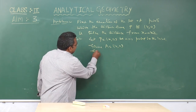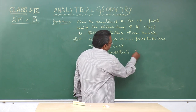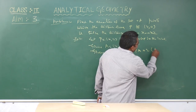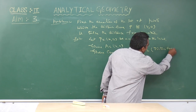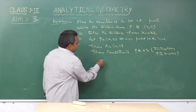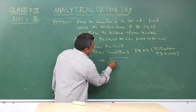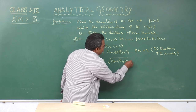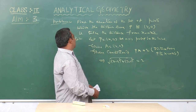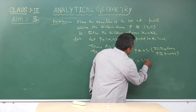The given condition is PA equals twice the distance from P to the x-axis. PA means the distance between these two points, that is square root of (x-4)² + (y-0)², equals 2 times the distance from P(x, y) to the x-axis, which is mod y, that is 2 times mod y.